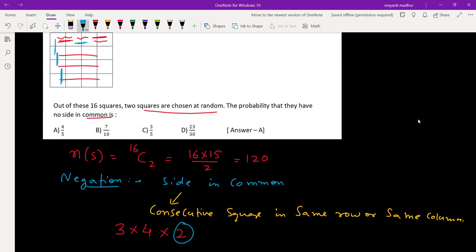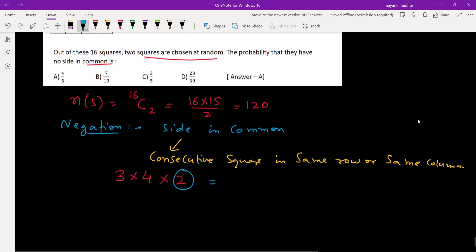So probability will be 1 minus negation case by total case, which will be 1 minus 24 by 120, equals 1 minus 1 by 5, and hence 4 by 5. The answer is given as option A, 4 by 5.